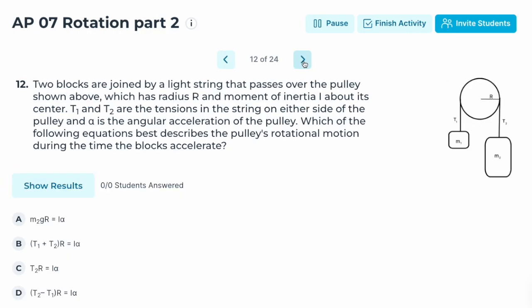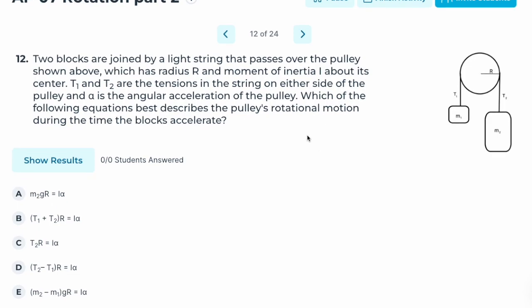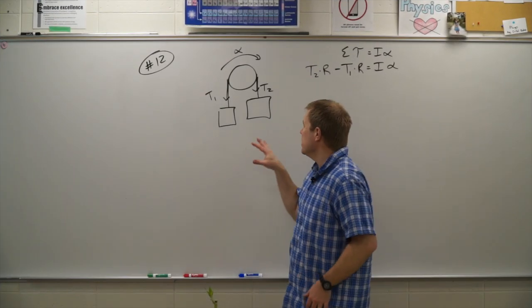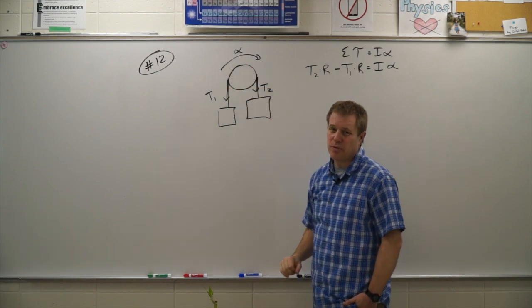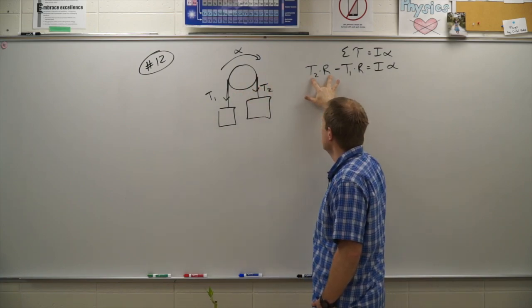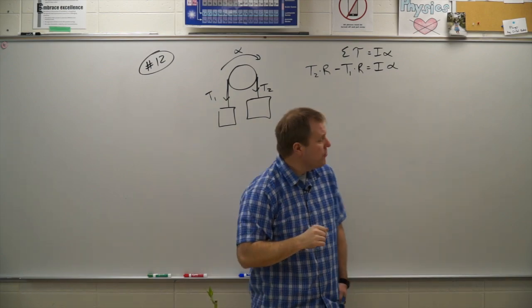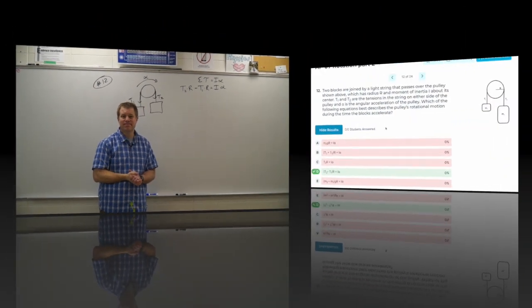Number twelve: two blocks are joined by a light string over a pulley of radius R and moment of inertia I. T1 and T2 are tensions on either side, and alpha is the angular acceleration. Which equation describes the pulley's rotational motion? T2·R drives the pulley in the positive direction and T1·R opposes it, giving (T2 − T1)·R = I·alpha. Factoring out R gives the answer. Correct answer: D.